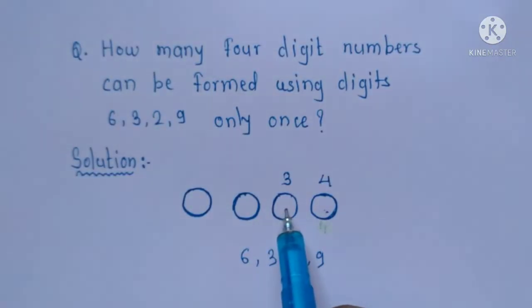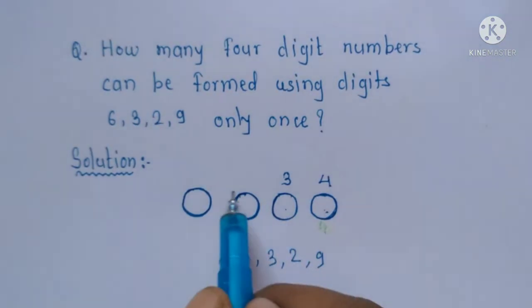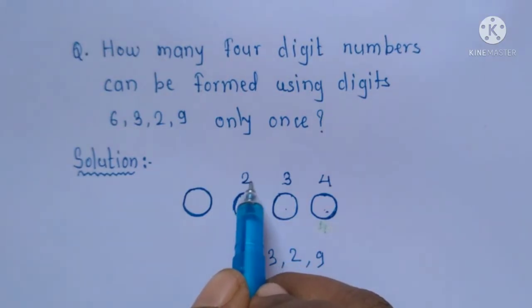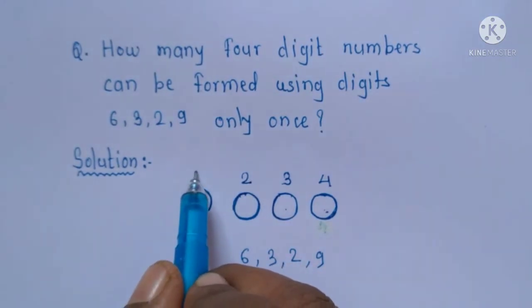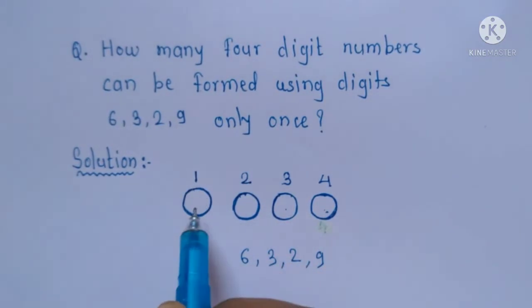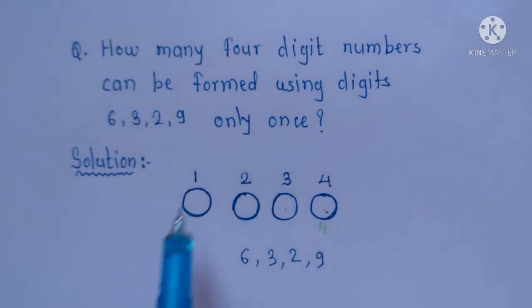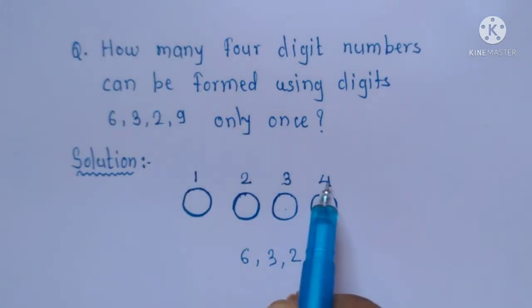Already one digit and one digit means two digits we already used here, so only two digits are available to fill this circle. And at last, only one digit is available to fill this circle.